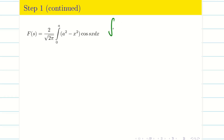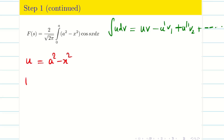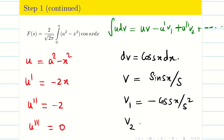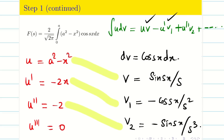To evaluate the integral we use Bernoulli's formula: ∫u dv = uv - u'v₁ + u''v₂ - ... We take the diminishing function u = a² - x², giving u' = -2x, u'' = -2, u''' = 0. We set dv = cos(sx) dx, so v = sin(sx)/s, v₁ = -cos(sx)/s², v₂ = -sin(sx)/s³. We get three terms since the highest power is 2, and after that everything becomes 0.